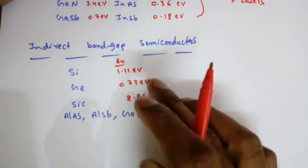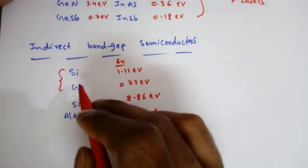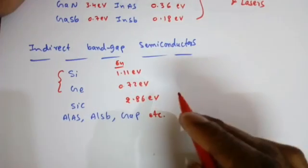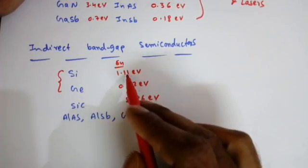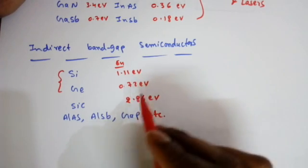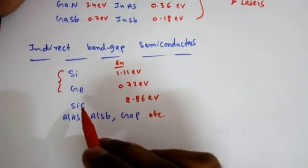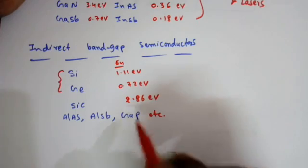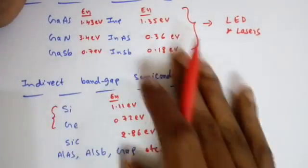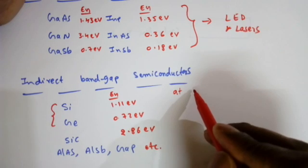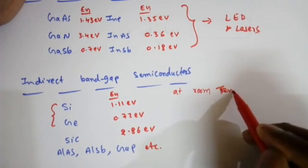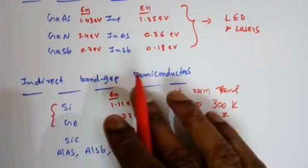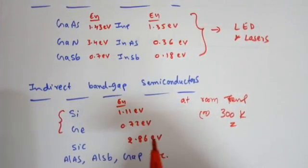Examples of indirect bandgap semiconductors include silicon with an energy gap of 1.11 eV and germanium with 0.72 eV — these are the semiconductors used in normal diode manufacturing and switching applications. Silicon carbide (SiC) has an energy gap of 2.86 eV, along with some other compound elements. All these energy gaps are measured at room temperature, that is, 300 Kelvin. This concludes the discussion on direct bandgap and indirect bandgap semiconductors.